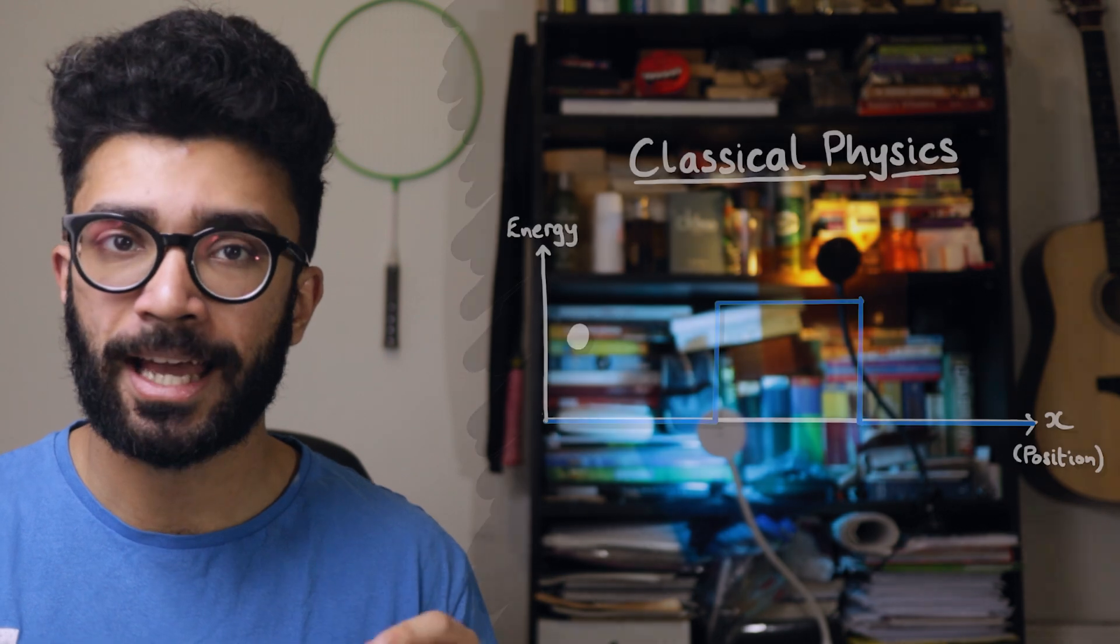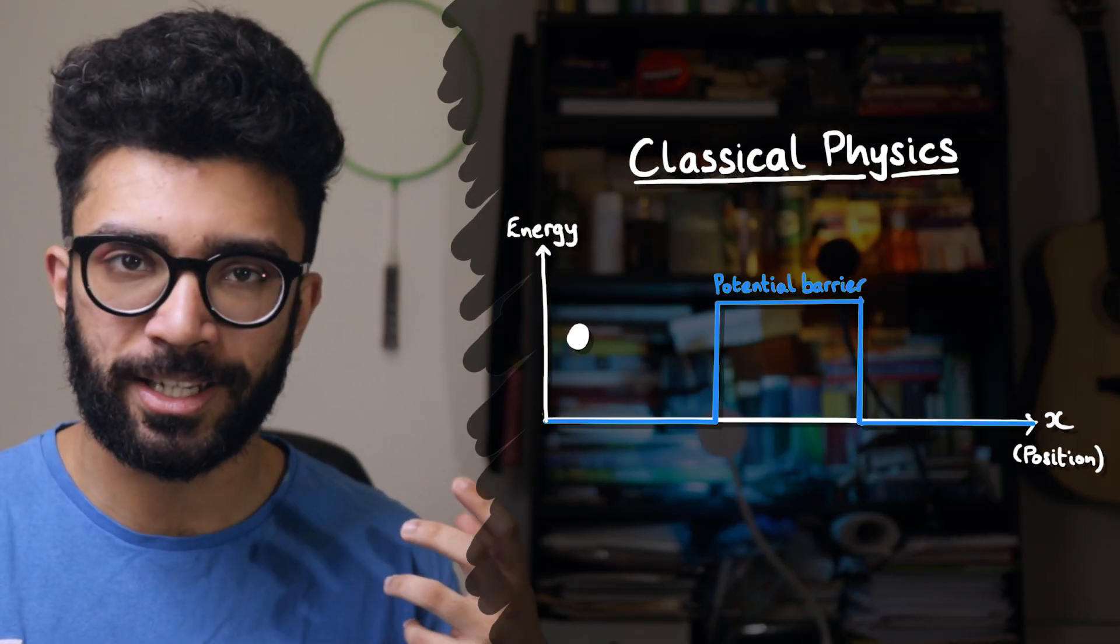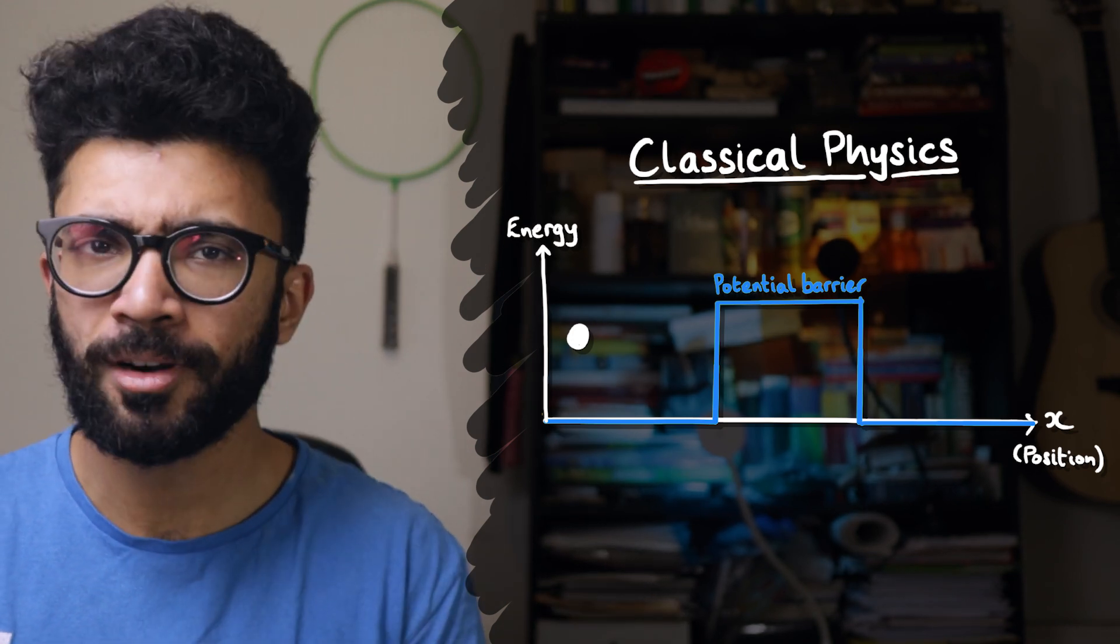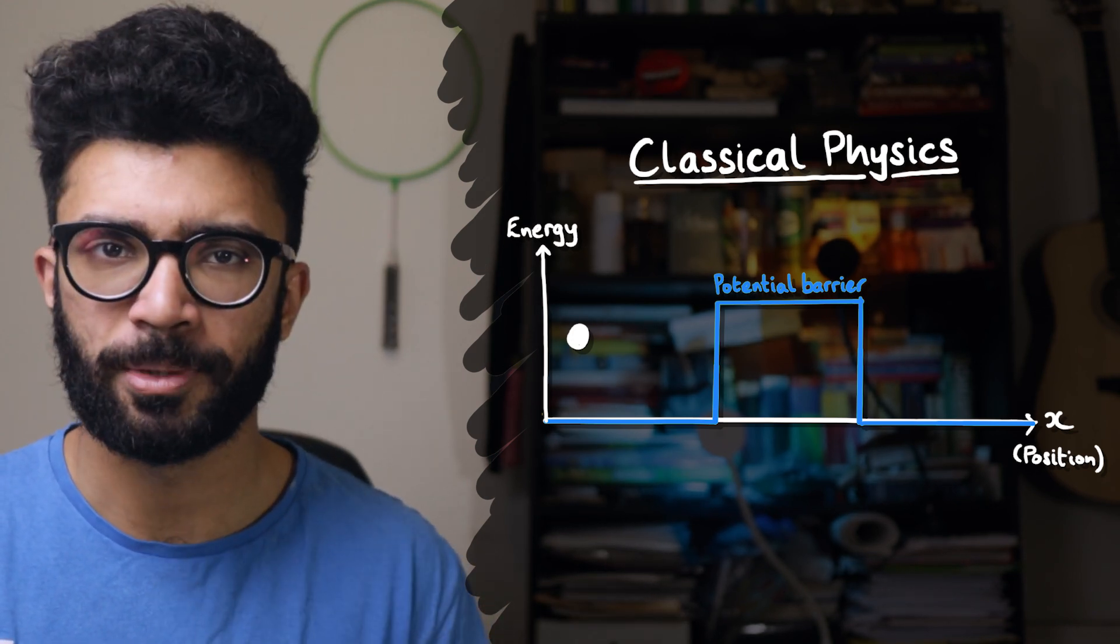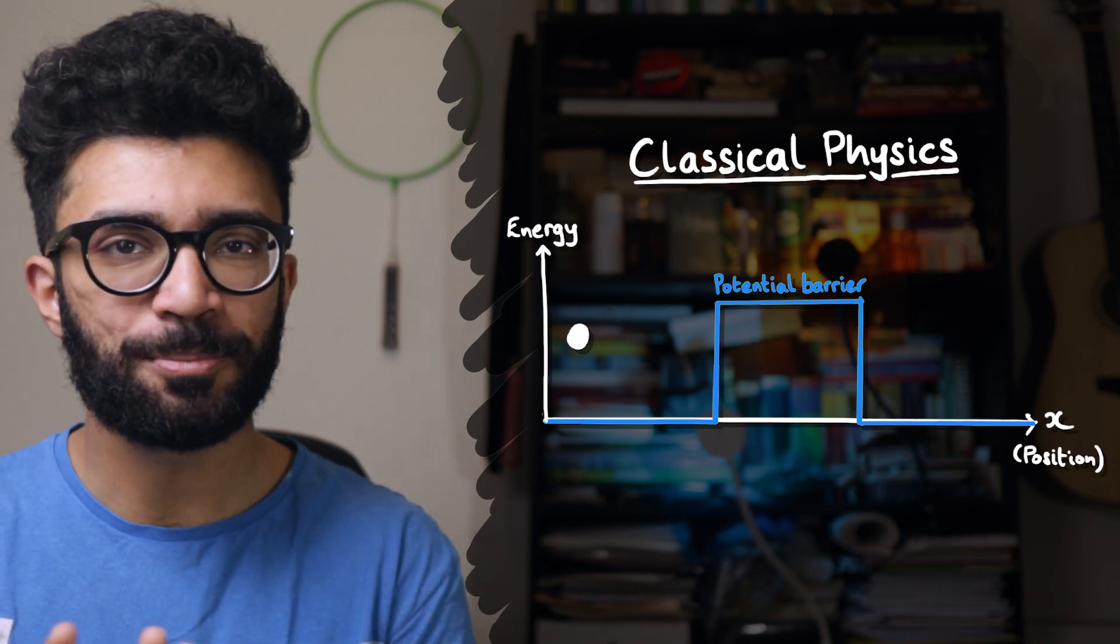Now, if you saw my previous video, you'll remember that I described what happens when an electron meets what's known as a potential barrier using a graph that looks like this. Don't worry if you don't know what a potential barrier is, by the way. And I guess, to some extent, if you don't even know what an electron is.